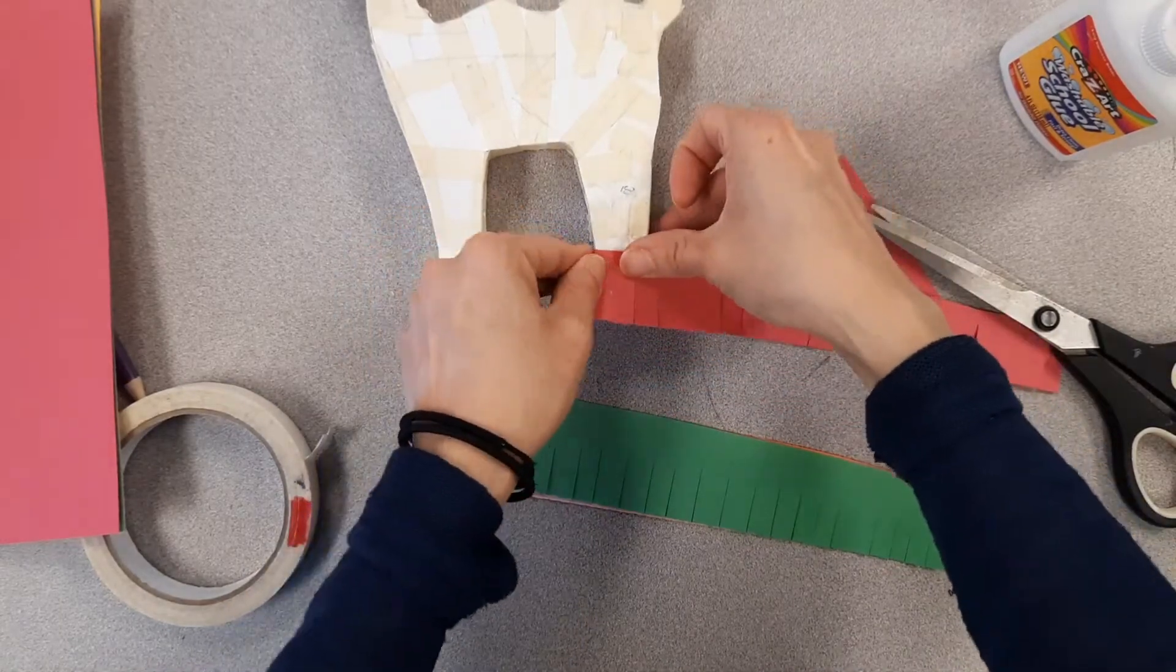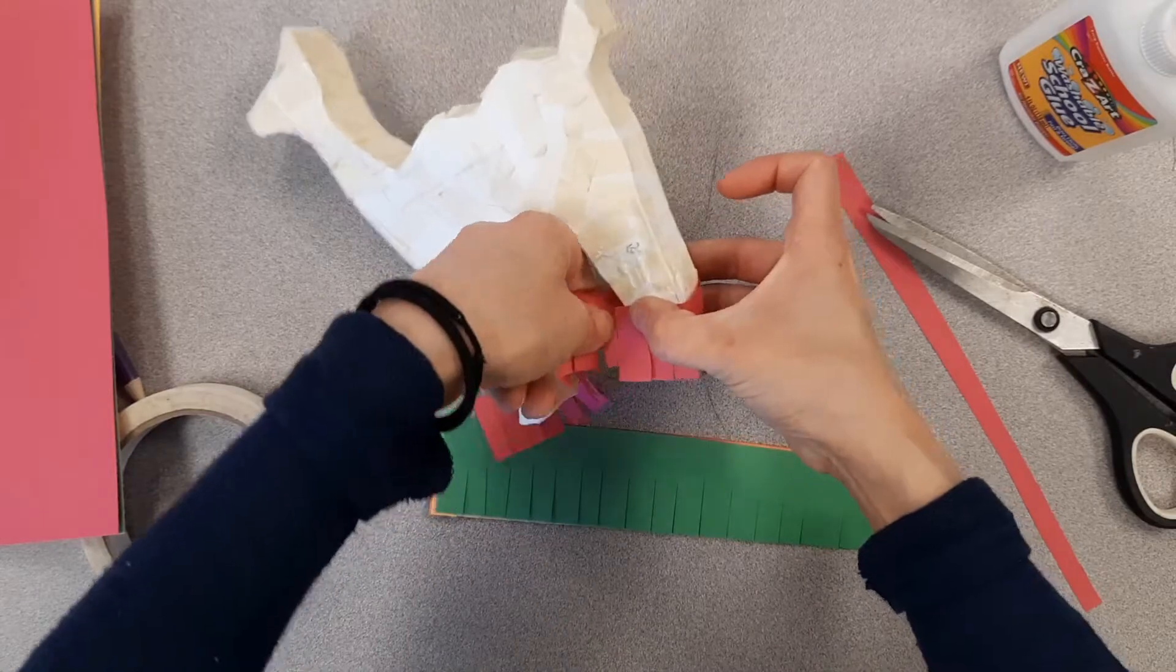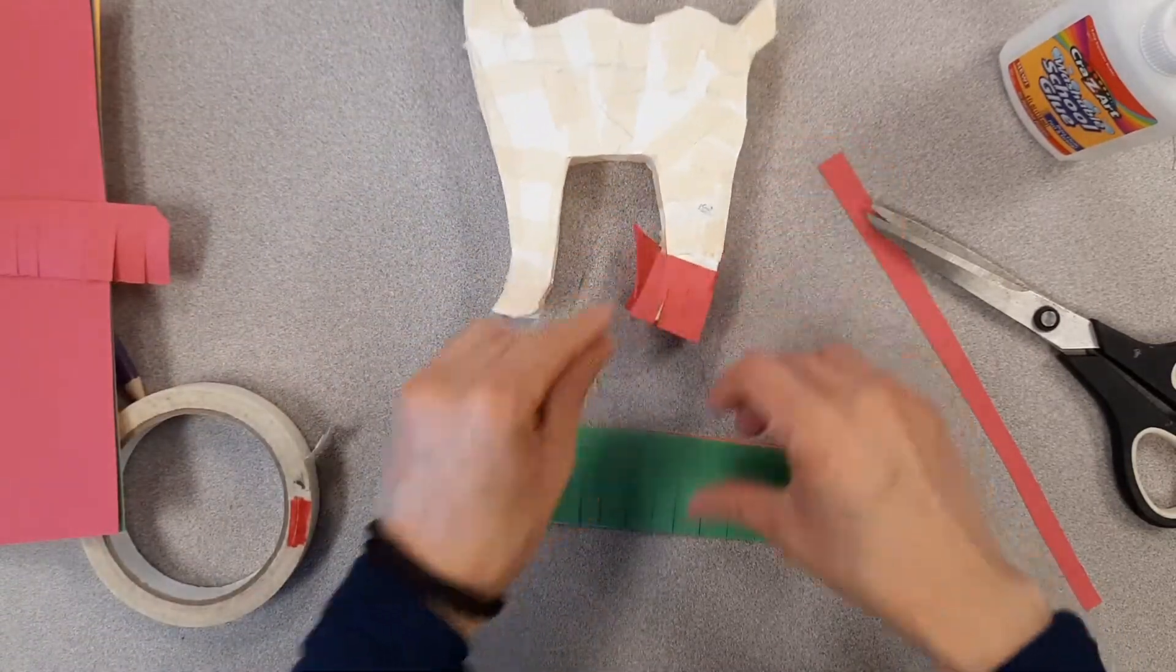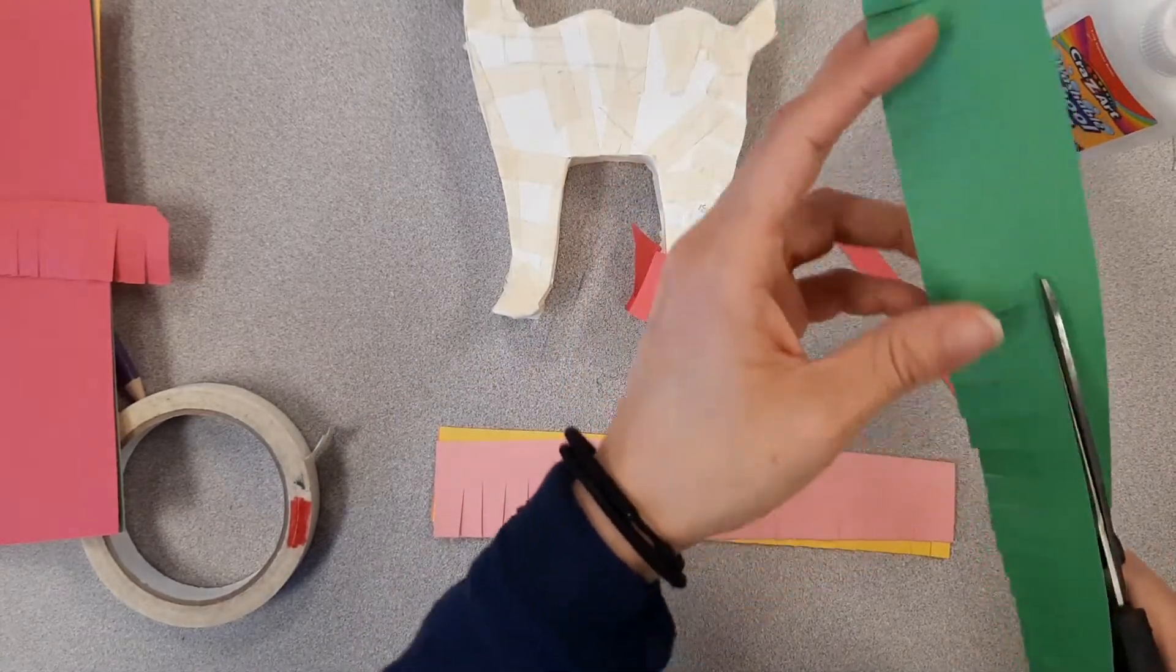So I'm going to put it right here, wrap it around, go all the way around my piece. Cut off the extra. I want my colors to alternate. So I'll put that. Then I'm going to cut off the extra on this one just because I don't like the extra. I should have cut them thinner.